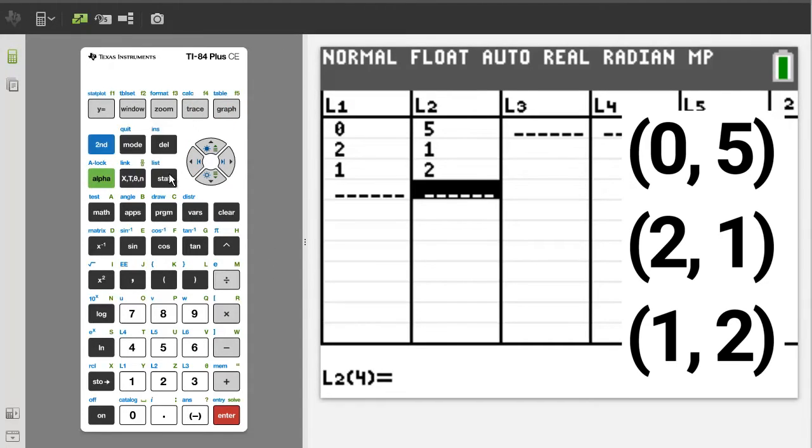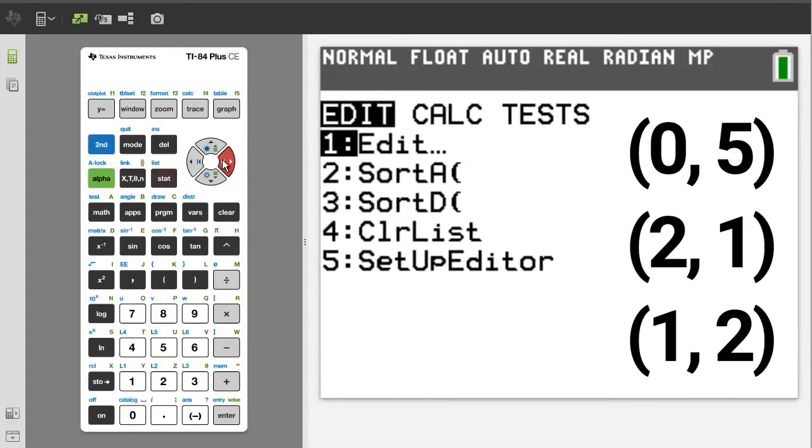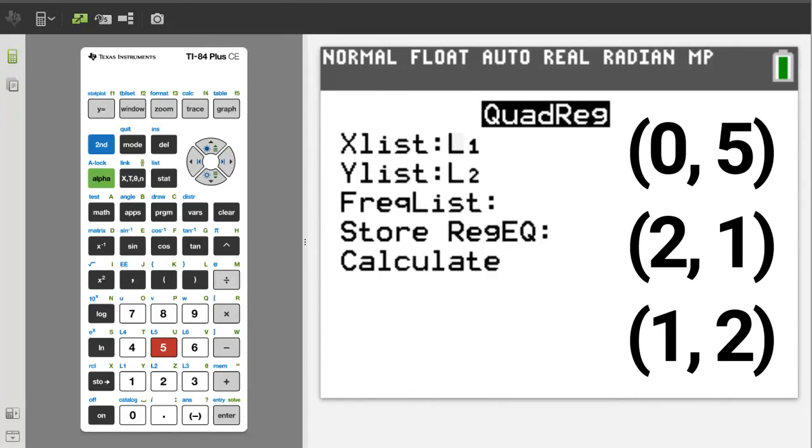press the stat button. Arrow over to calc. We want quadratic regression number 5. Press the 5 button. Arrow down and highlight calculate. Press the enter button.